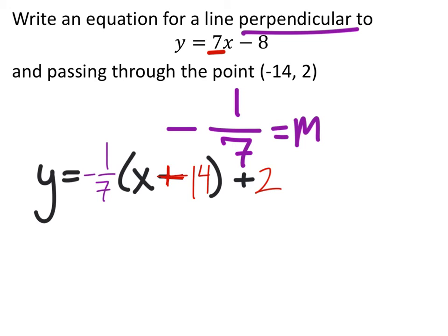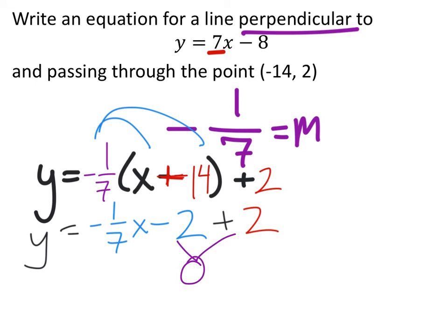Next thing we need to do is distribute that negative 1/7 into the parentheses. We would have negative 1/7 x minus negative 1/7 times 14, which gives us negative 2, and then of course we have that plus 2 as well. This all equals y. The final thing we need to do is combine the negative 2 with 2. That would be 0. Everything else remains the same. We didn't do anything with that negative 1/7 x. There was nothing to combine it with.